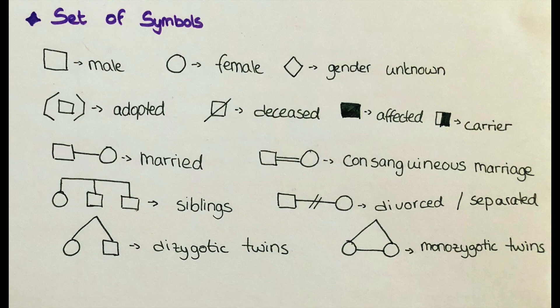There is also a possibility to indicate if one of the children was adopted, if one of the family members was deceased, and if a person was affected or is a carrier — indicated by filling in the shape. We can also symbolize different relations, such as married or divorced, siblings, or a marriage between cousins indicated by a double line.